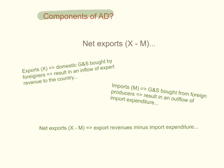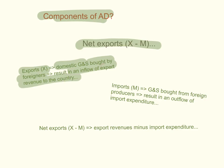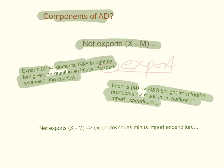The last component of Aggregate Demand is net exports, which is exports (X) minus imports (M). Exports are domestic goods and services bought by foreigners — they result in an inflow of export revenue to the country. Imports are goods and services bought from foreign producers — they result in an outflow of import expenditure and are considered a leakage from the circular flow. So net exports (X minus M) equals export revenues minus import expenditure.